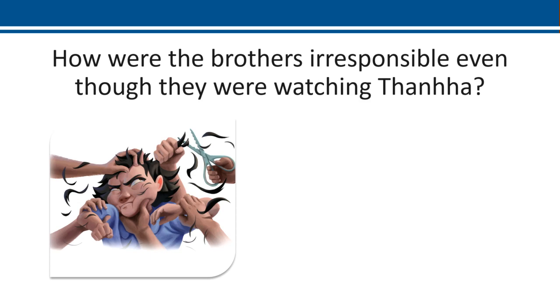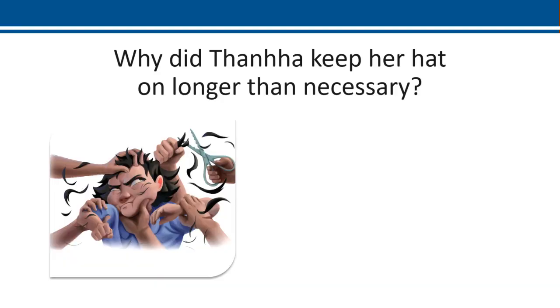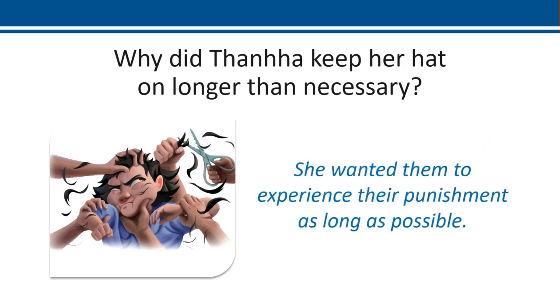The last incident she recounted was about her haircut — also kind of a funny story. The brothers were irresponsible in that they cut Thanh Ha's hair without caring about how it would affect her, and there were consequences for them. Thanh Ha kept her hat on longer than necessary because she wanted her brothers to continue escorting her to school, taking her everywhere, and buying sugar cane cubes — she wanted them to experience their punishment as long as possible.